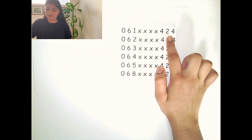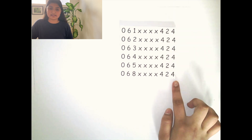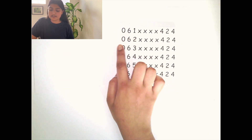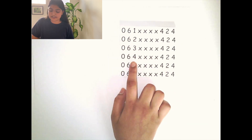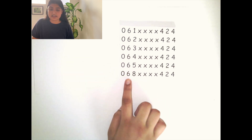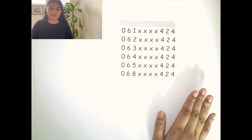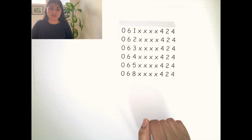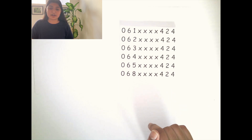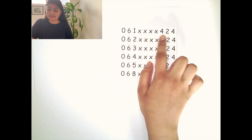Now that we know the total possible phone numbers available, we need to find Rena's favorable phone numbers. Rena wishes her phone number to end in 424, and the number could still start with 061, 062, 063, 064, 065, or 068 — as long as they all end with 424. Let's find the total possible phone numbers that begin with 061 and end with 424.